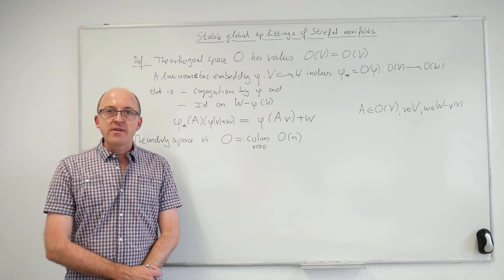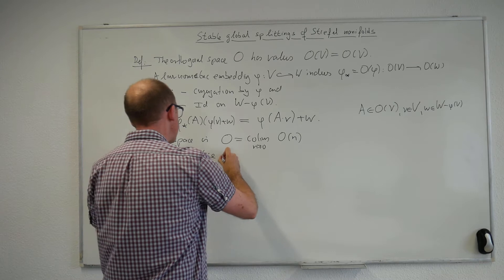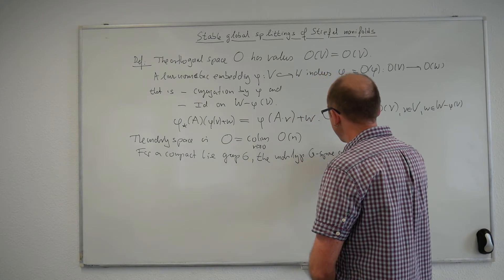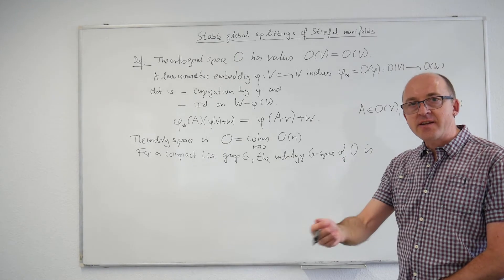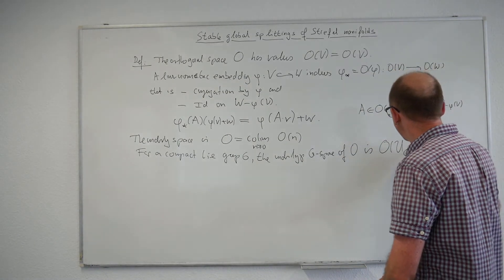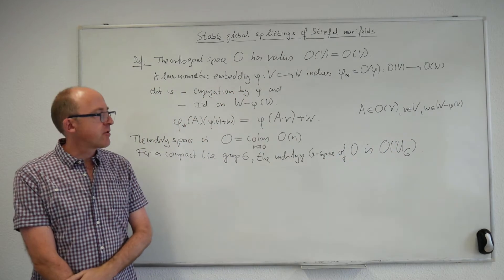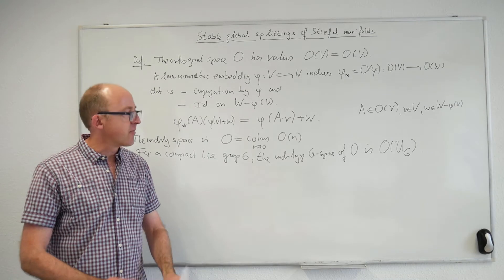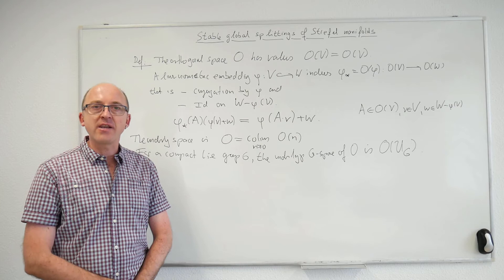For a compact Lie group G, the underlying G-space of O is obtained by evaluating at a complete G-universe. Since O is a closed orthogonal space with all structure maps being closed embeddings, we access the underlying G-equivariant homotopy type by evaluating at the complete G-universe. This is the orthogonal group of the chosen complete G-universe — either as a colimit over G-sub-representations or as isometries of U_G that are the identity on the complement of something finite-dimensional.